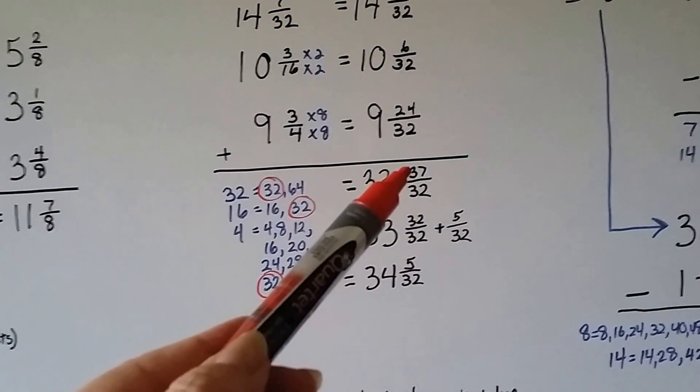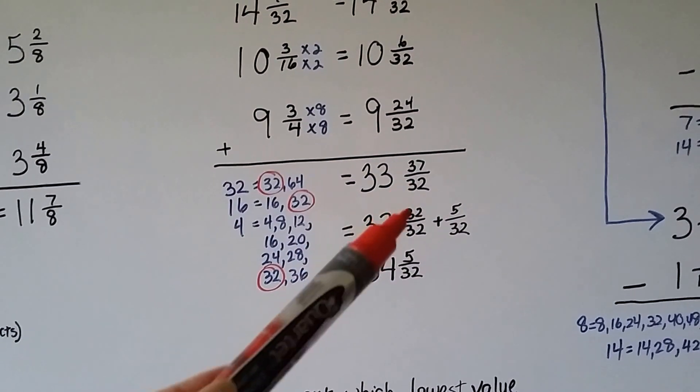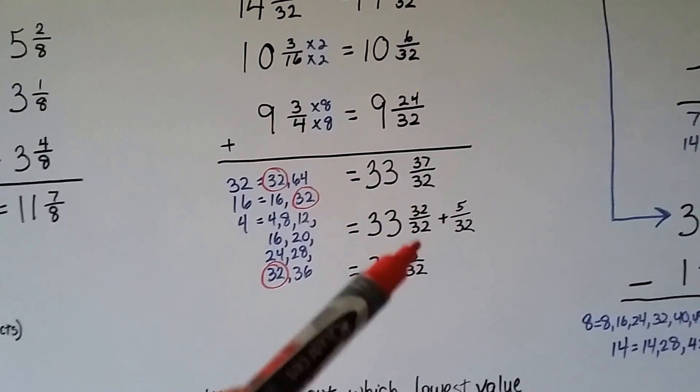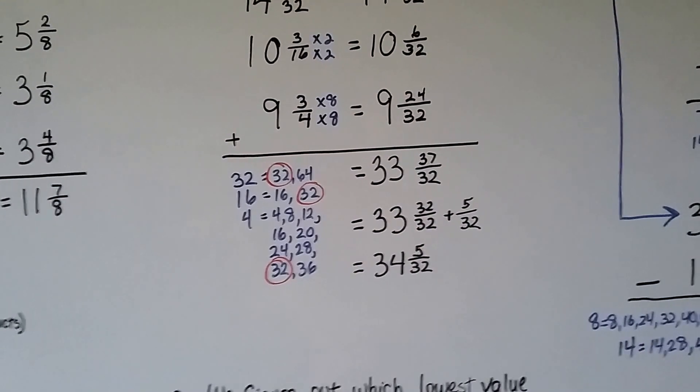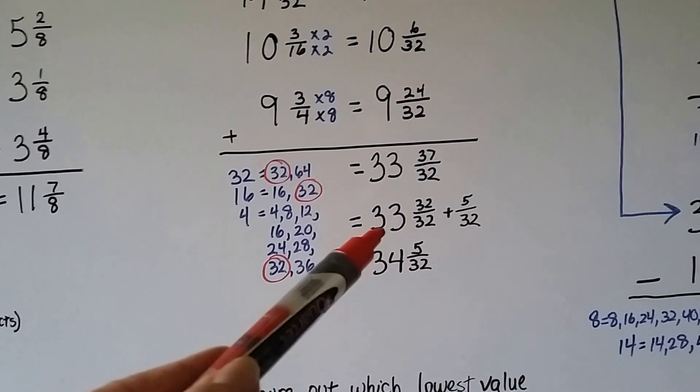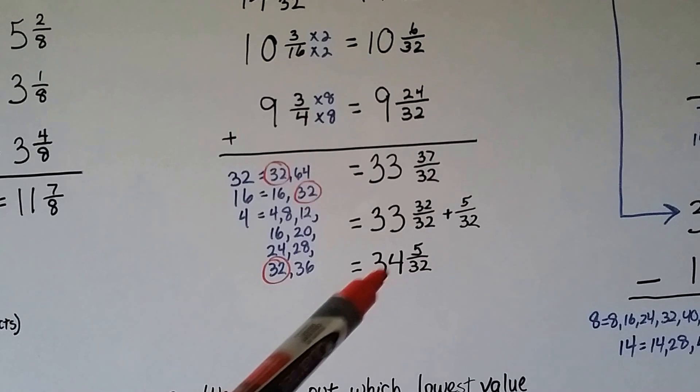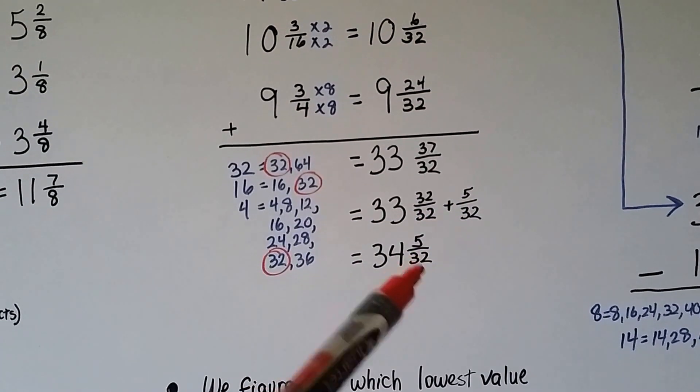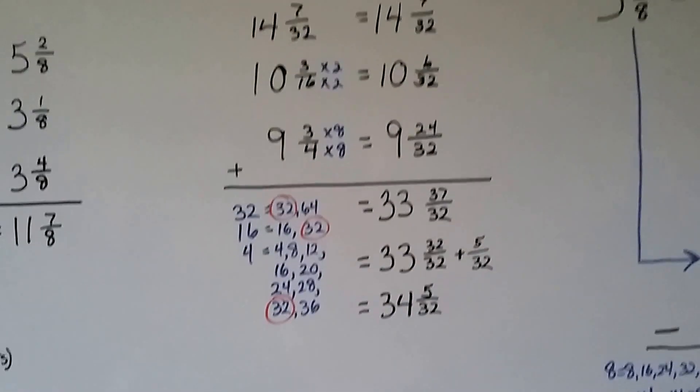Now, because this numerator is larger than the denominator, we can pull out a 32 over 32 as a 1. Because when the numerator and denominator are the same, it equals 1. That's going to make this a 34. We give that 1 to the 33. And we have 5 32nds left over. We have 34 and 5 32nds.